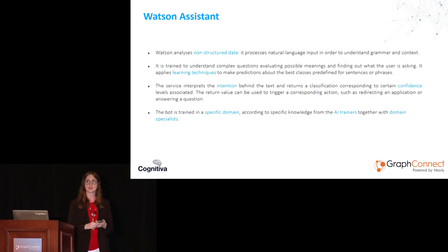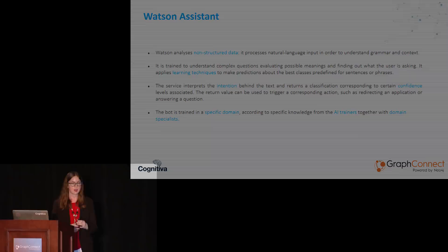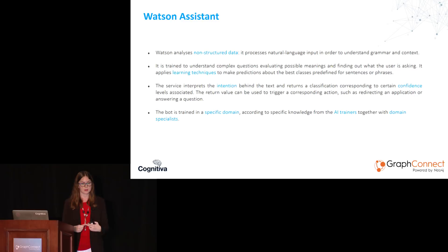Watson Assistant applies learning techniques to make predictions about the best predefined classes for sentences or phrases. The service interprets the intention behind a text and returns a classification which corresponds to certain confidence levels. This value can be used to trigger a corresponding action — maybe redirecting an application or answering a question. Our bot is trained in a specific domain in each case, according to both the specific knowledge of the AI trainers, which would be us at Cognitiva, and the domain specialist, which would be the companies that hire us.